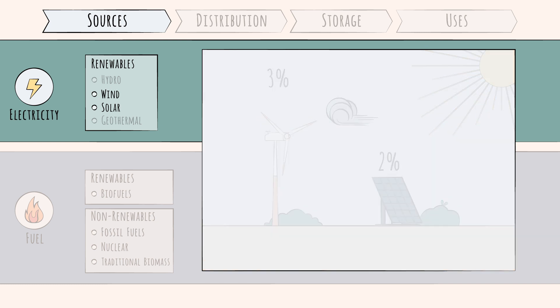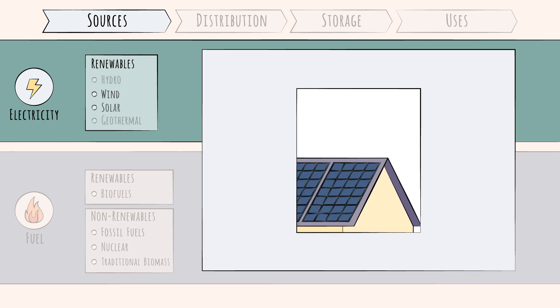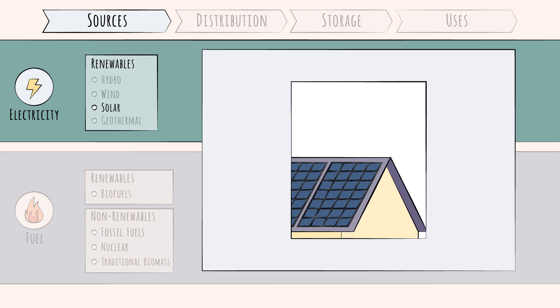Wind is often further segmented as onshore versus offshore. Offshore generally involves larger, more efficient turbines built at greater cost. Solar is often further segmented by the underlying technology: photovoltaic solar, or PV, which turns light into electricity directly, as in what you see on rooftops.